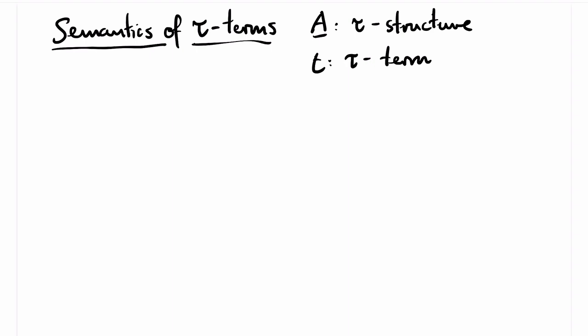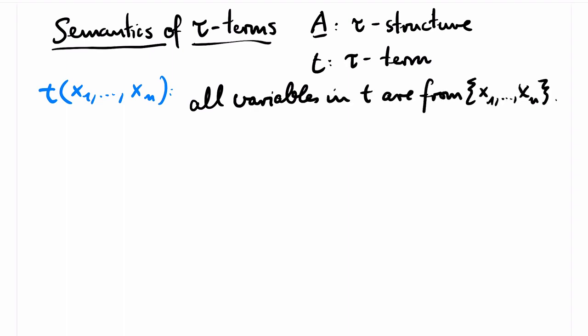We now define the semantics of tau terms relative to some tau structure. So we have some fixed tau structure A and some tau term T. We write T to indicate that all variables that appear in T are from x1 up to xn. I don't insist that all variables really show up. I just want that all variables that are used come from x1 up to xn.